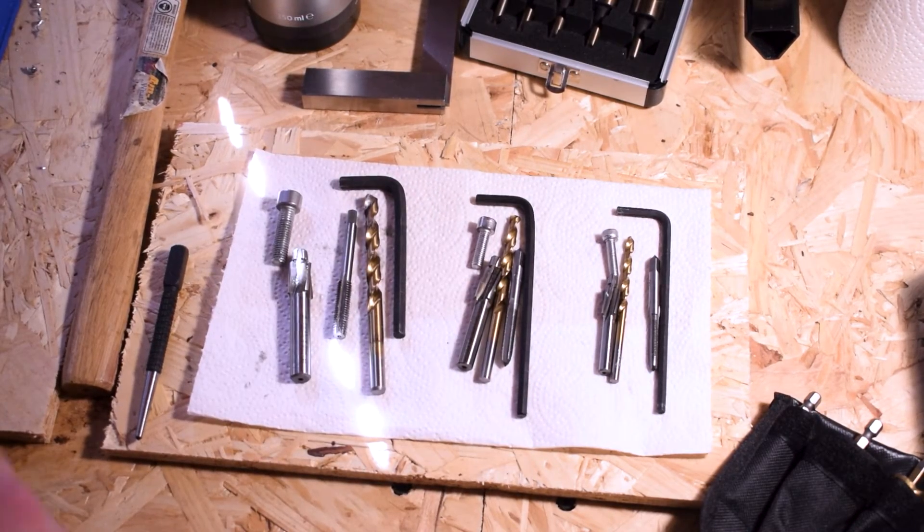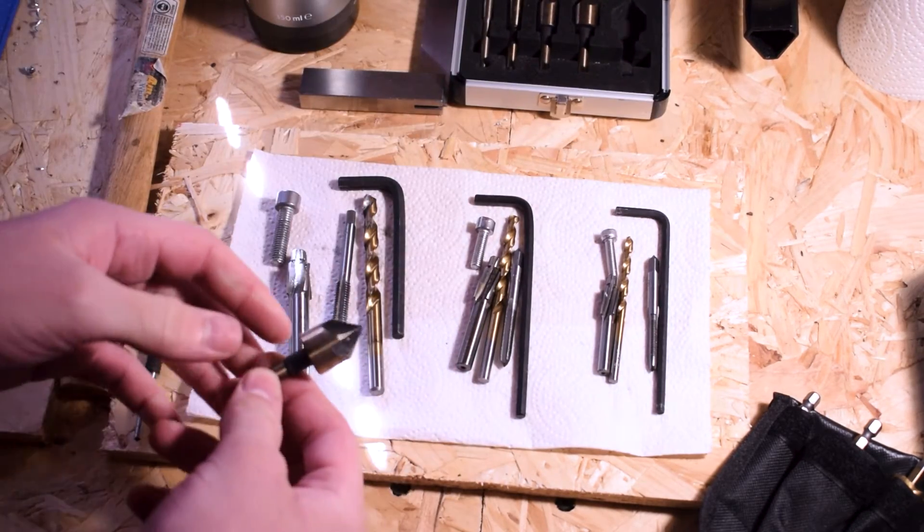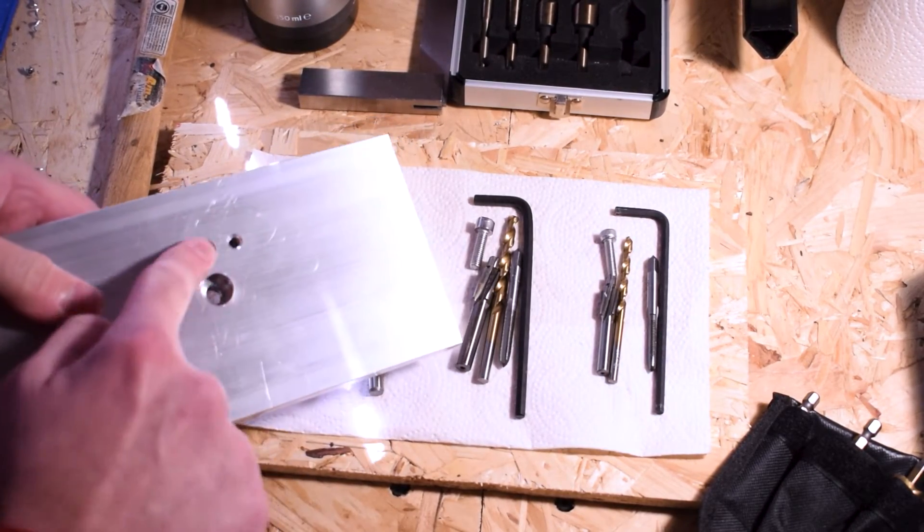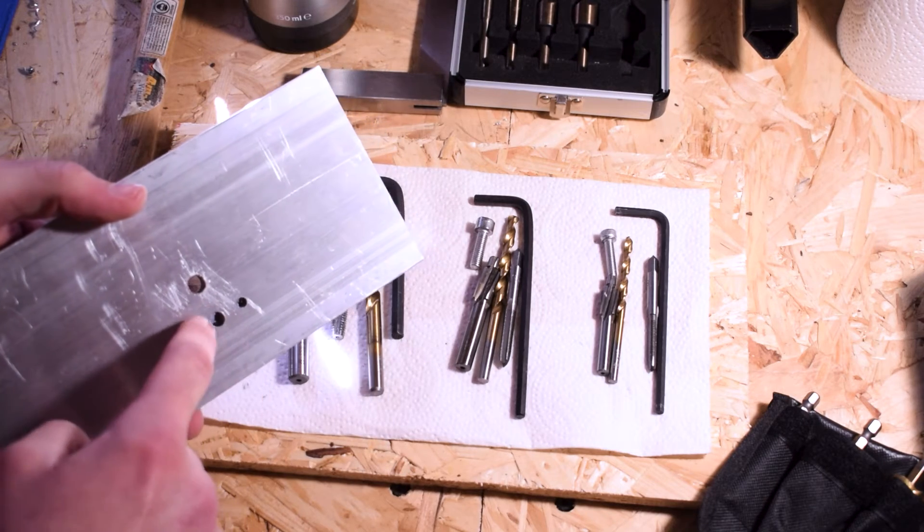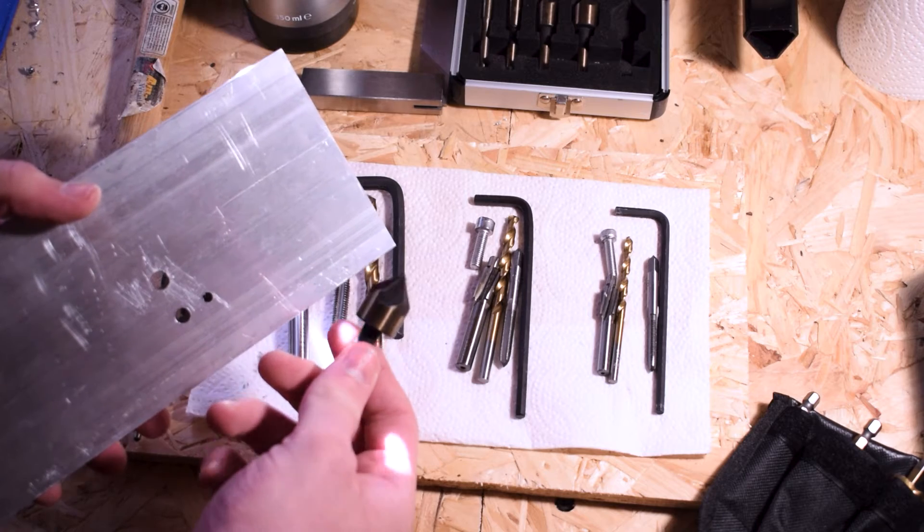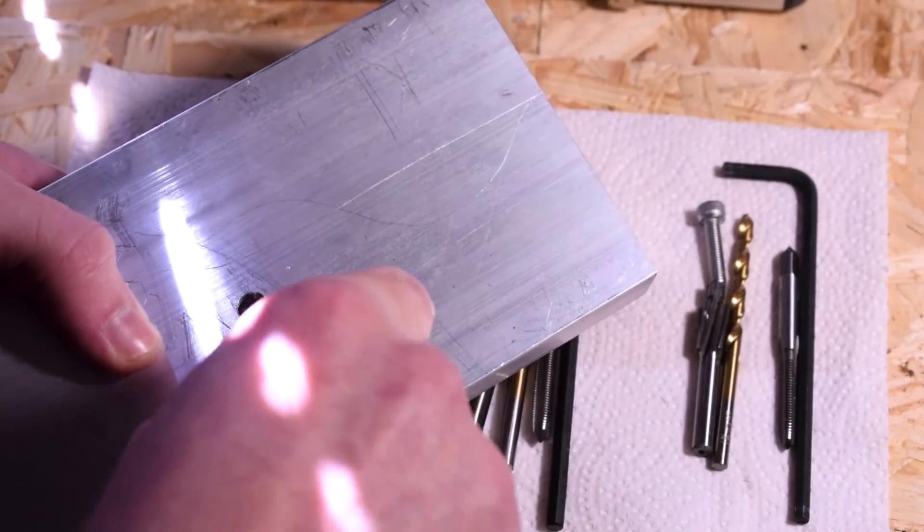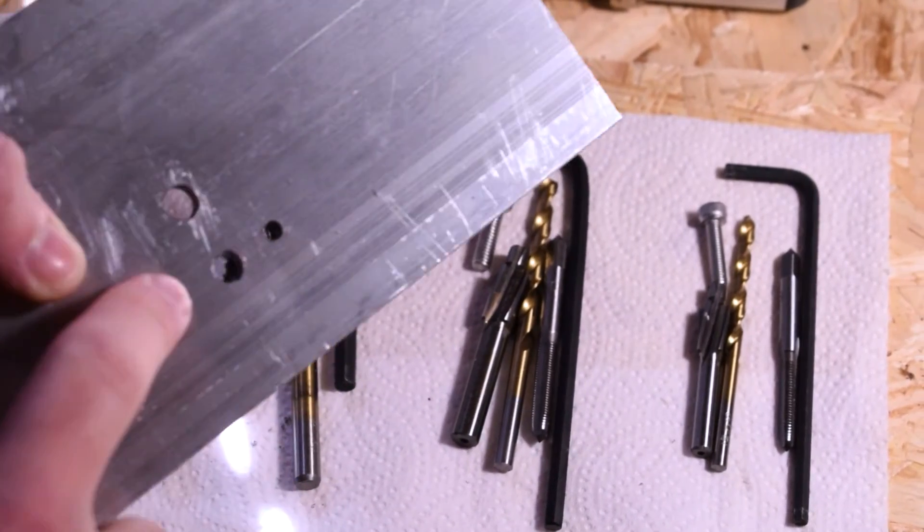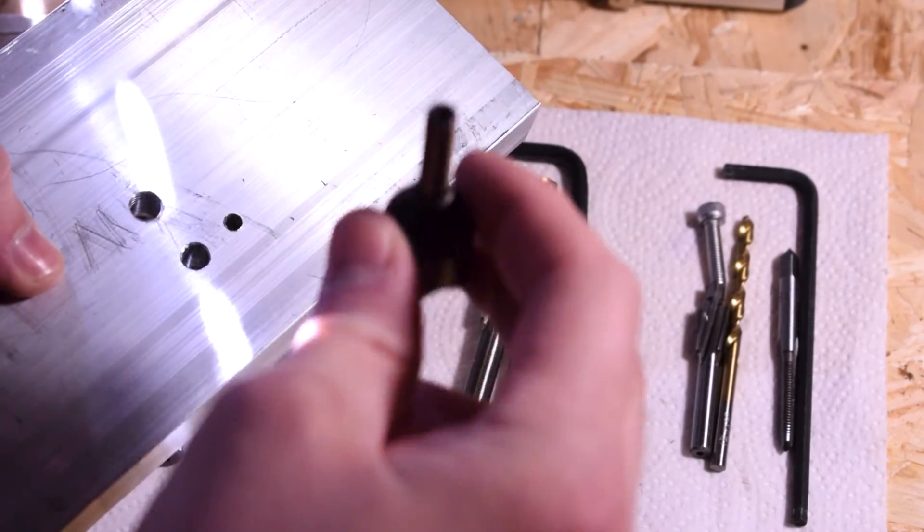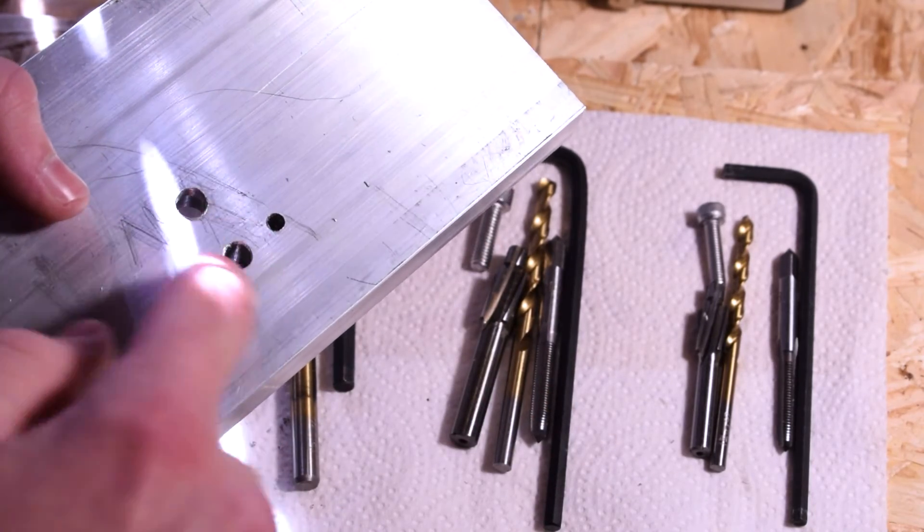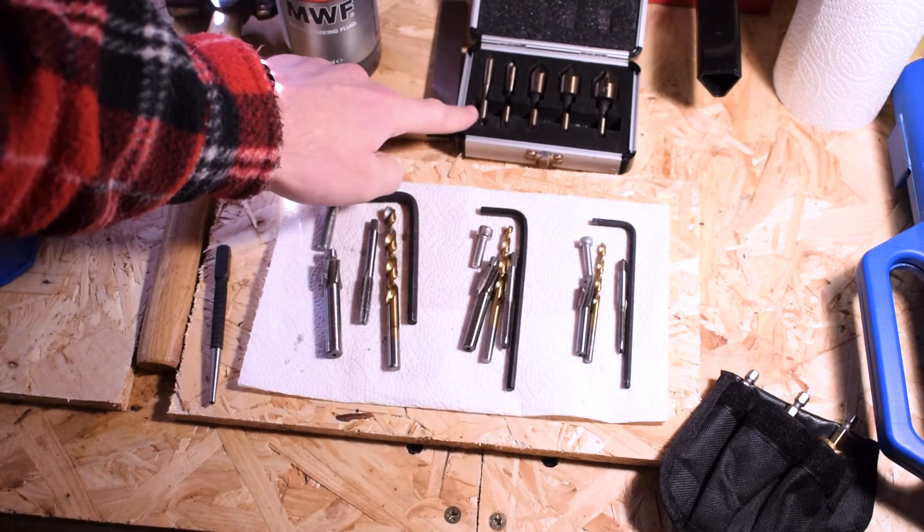Another thing that's particularly useful are countersink bits like these. Typically when you drill a hole, the top end can start to look a little bit ugly - you might have some burrs there. A bit like this you can use to eliminate that. On that hole there, for example, even just doing that with my hand, you can see it's put a little chamfer on the edge and really cleaned that up. On the pillar drill, if it's perfectly straight and you do that nicely and gently, you get a really nice chamfer on the edge. They're also handy for countersunk screws. These generally come in a set and they're not too expensive.